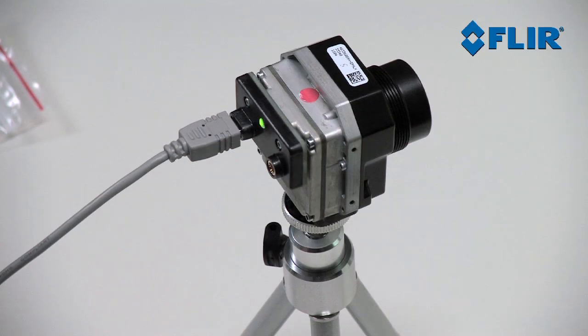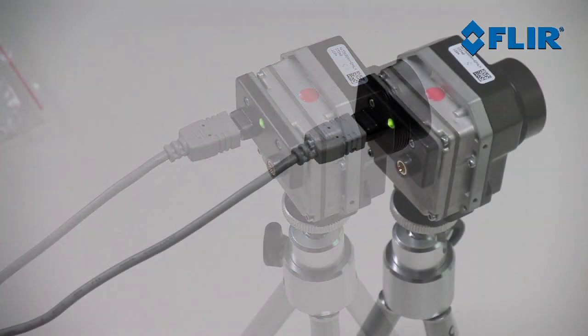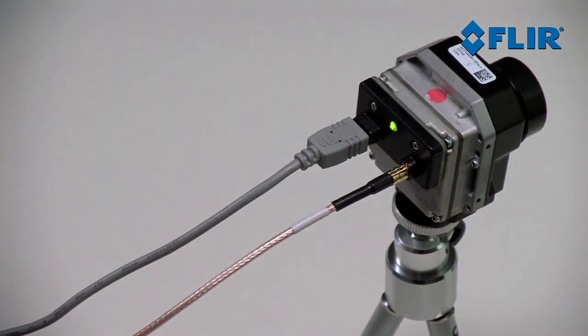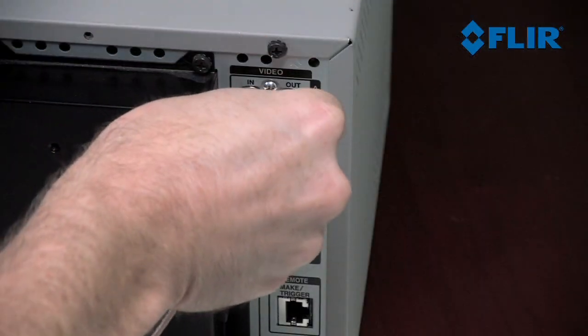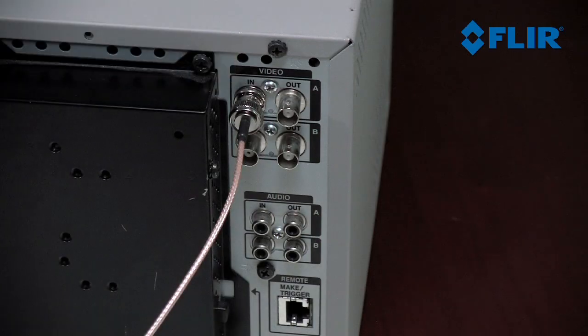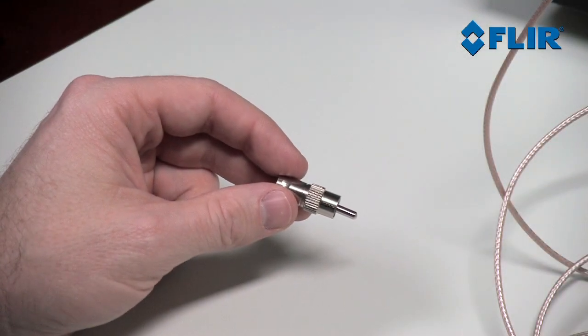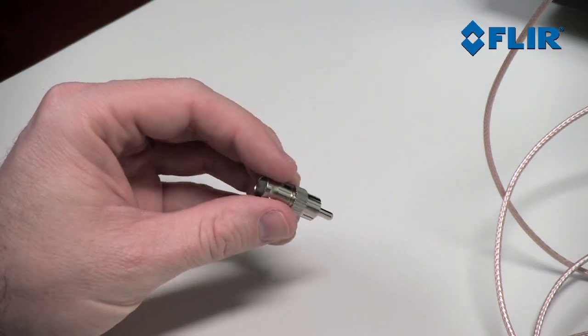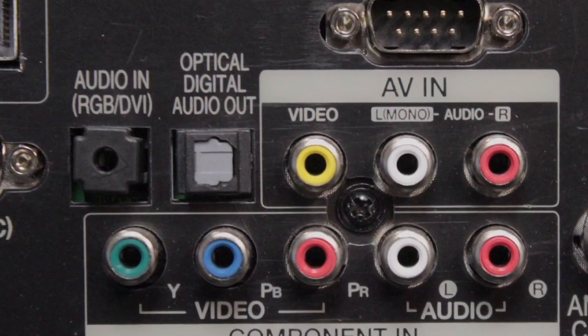The green light on the VPC module should turn on. Plug the MCX connector end of the video cable into the VPC module. Plug the coaxial connector into a video monitor or TV with an external video input. You may need an RCA adapter. These are available at any electronics store and allow the camera to be connected to the standard yellow video input on a monitor.